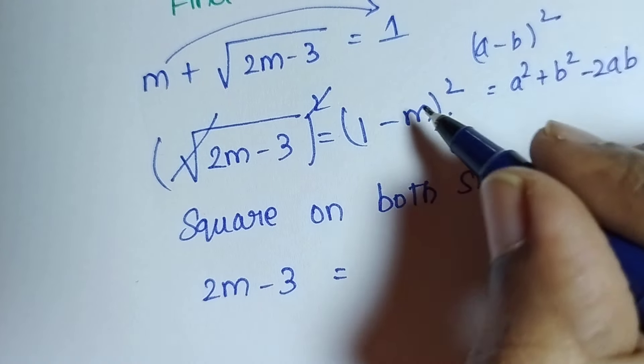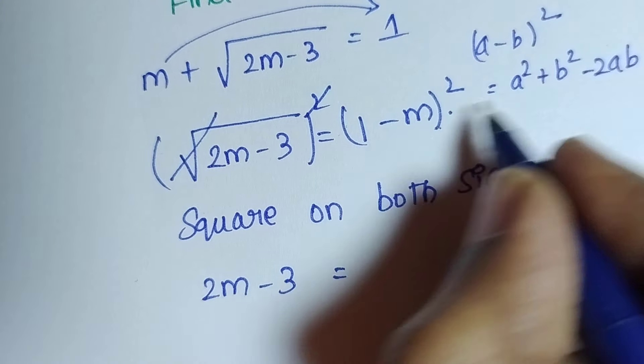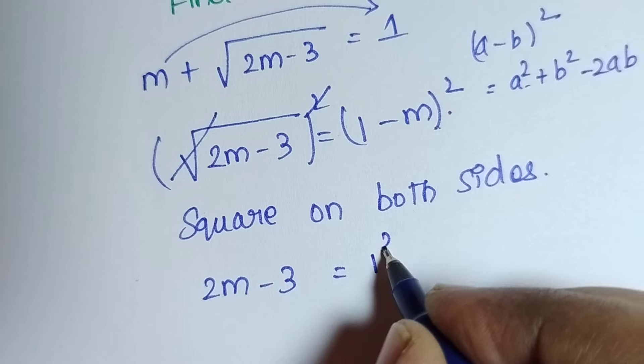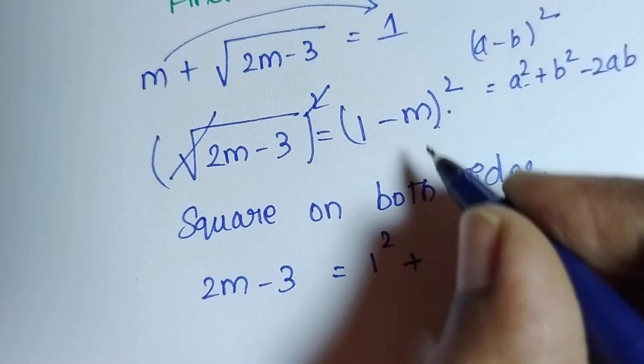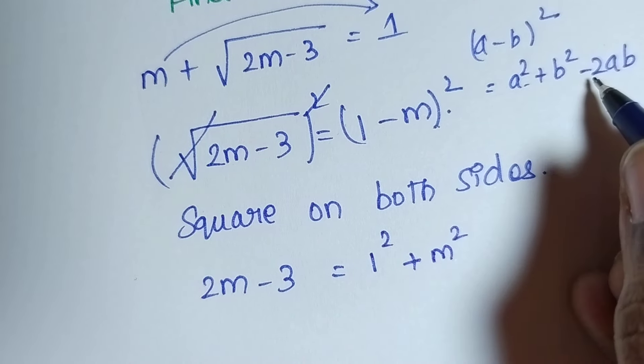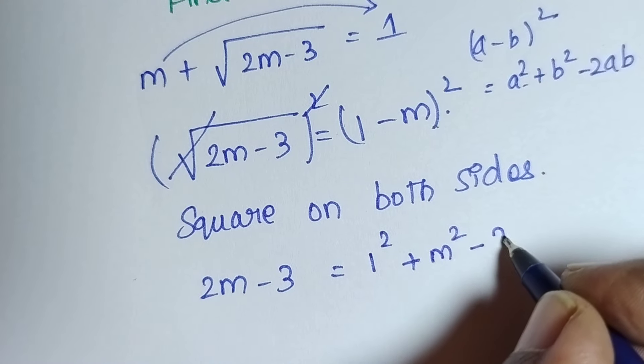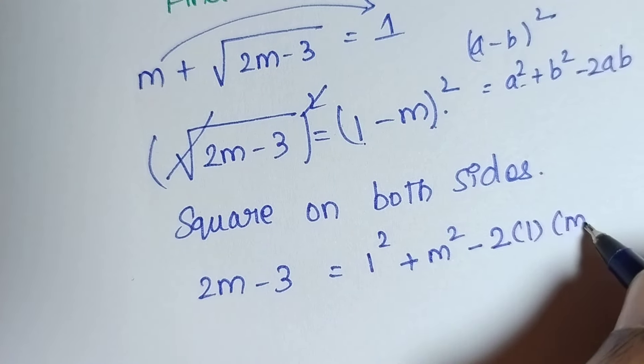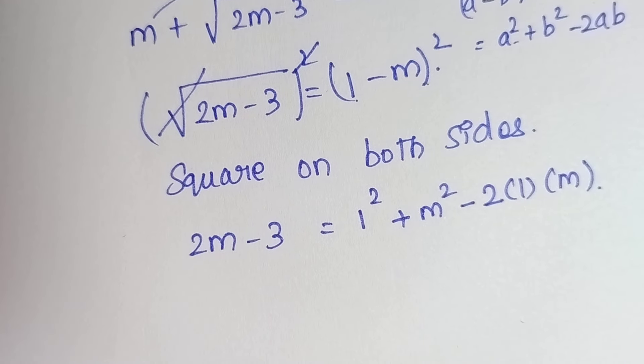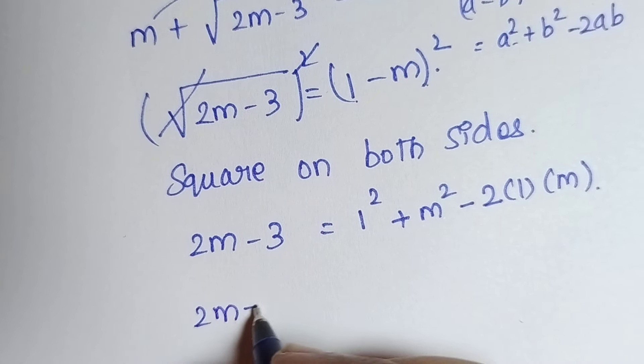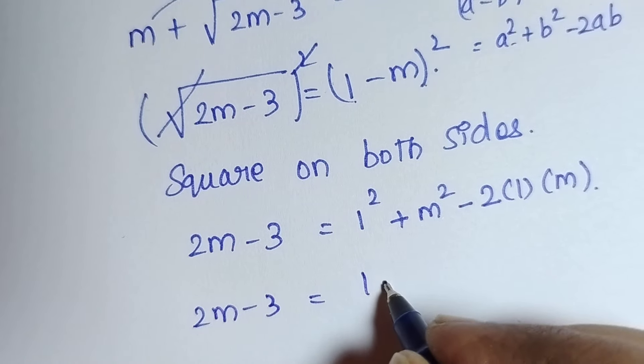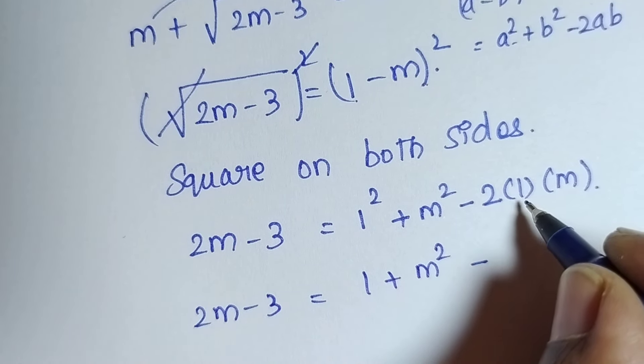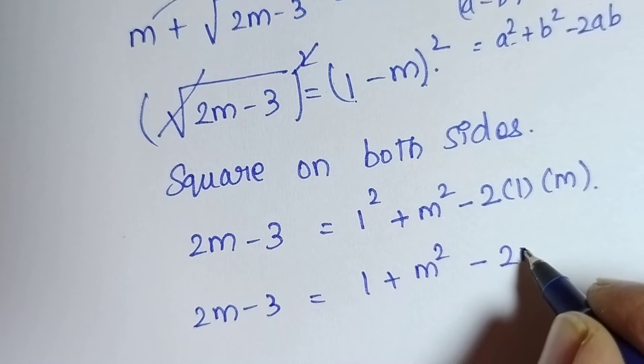Just update this formula in the place of this. Here a square is 1 square and plus b square is m square and minus 2 into a is 1 and b is m. Therefore, 2m minus 3 is equal to 1 square is 1 plus m square minus 2 into 1 into m, 2m.